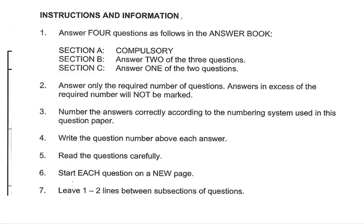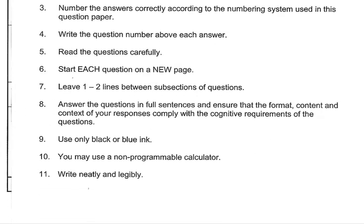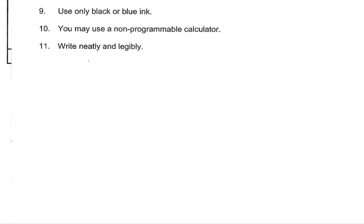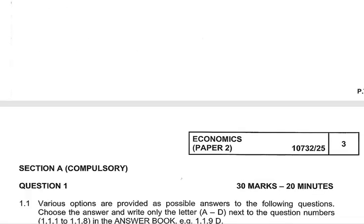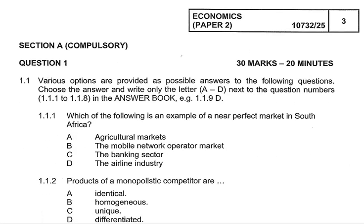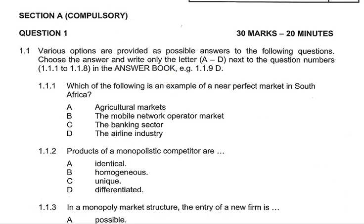We know very well that Section A is out of 30, and the time allocated to complete it is 20 minutes. We start Section A, which is compulsory question one. Various options are provided as possible answers. Choose the answer and write only the letter A to D next to question numbers 1.1.1 to 1.1.8 in the answer book. For example, 1.1.9 D.